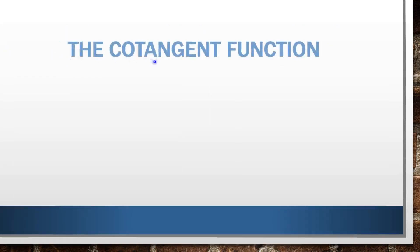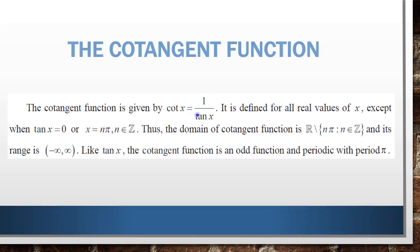Next is the cotangent function. The cotangent function is given by cot x = 1/tan x. It is defined for all real values of x except when tan x = 0. The general solution for tan x = 0 is x = nπ for all n belonging to ℤ. Thus the domain of the cotangent function is all real numbers except the set of all nπ such that n belongs to ℤ, and its range is (−∞, +∞). Like tangent, the cotangent function is an odd function and periodic with period π.